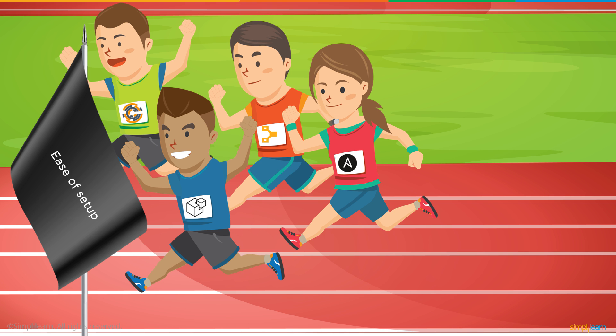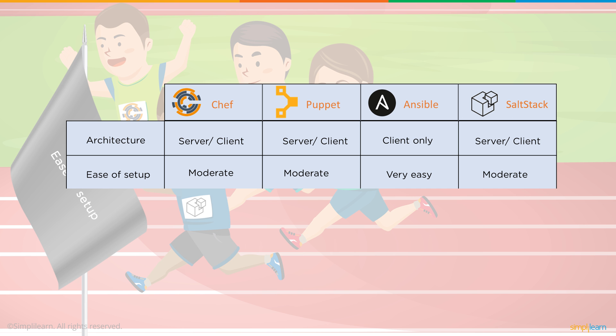For ease of setup, Ansible really stands out as the easiest tool to configure. If you're new to these types of tools, you may want to start with Ansible to try out automated configuration before looking at others. That said, Chef, Puppet, and SaltStack aren't that hard to set up either, and there are great instructions available in their online communities.